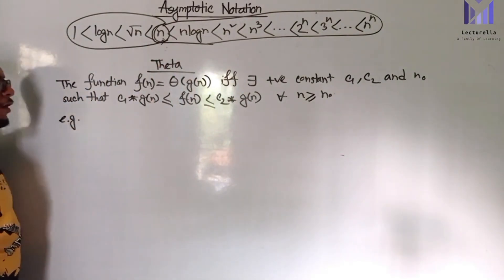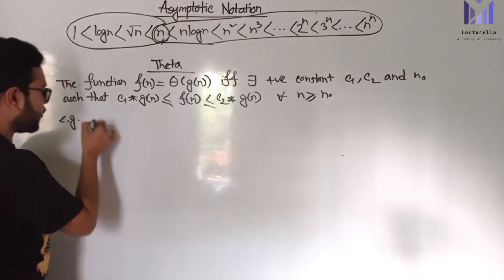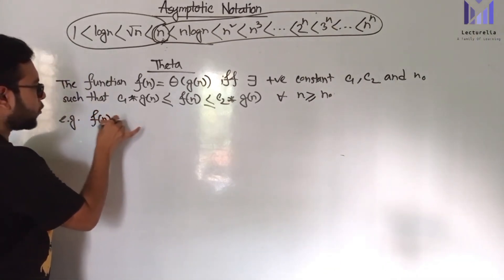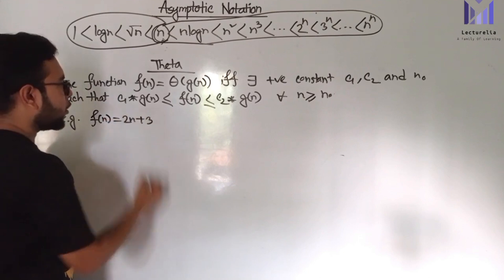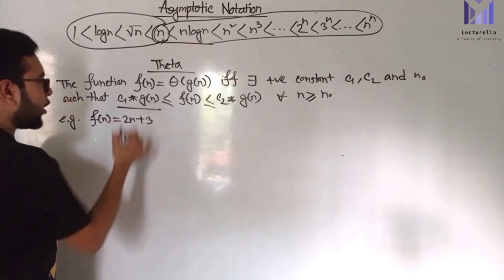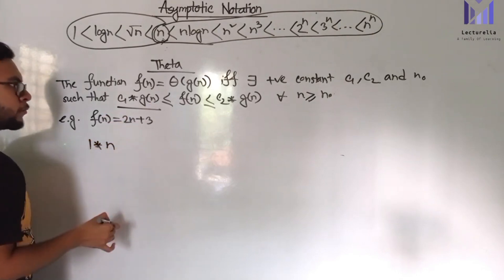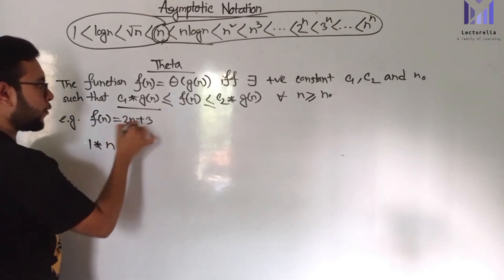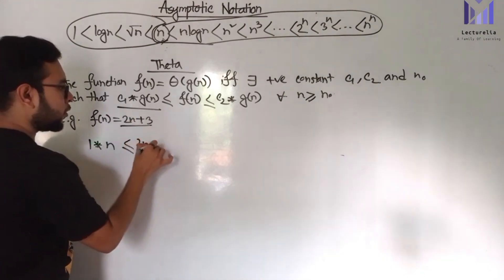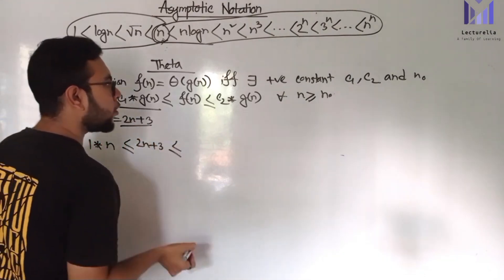Taking the same example: function of n equals 2n plus 3. From the condition, g(n) is less than or equal to f(n), so n is less than or equal to 2n plus 3.